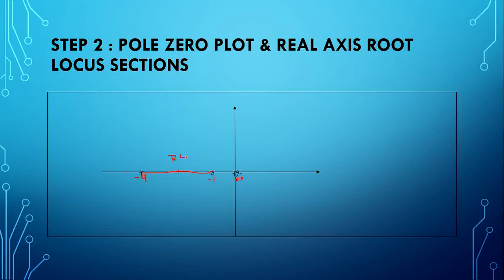From the pole-zero plot, we can predict the breakaway point. As per general prediction we have three predictions. First prediction — adjacently placed poles — not occurring here. Second prediction — adjacently placed zeros — not existing. Third prediction — zero present with real axis root locus section beyond it — also not occurring. So all three predictions are not happening; there is no breakaway point as per general prediction.